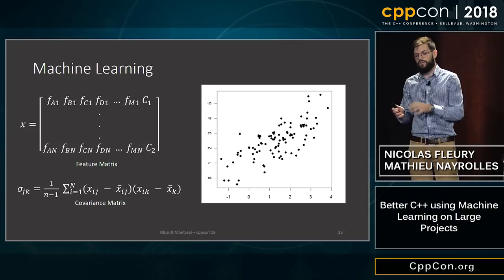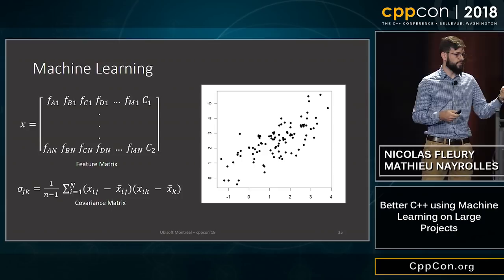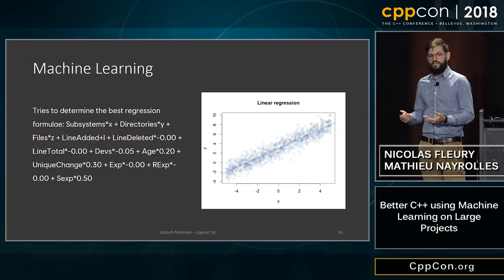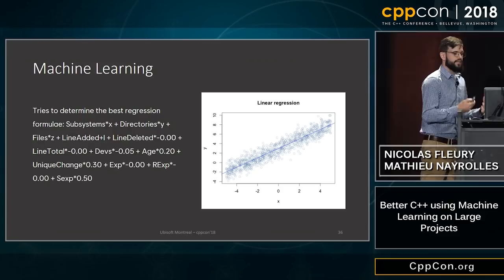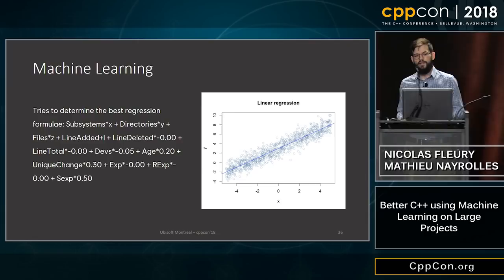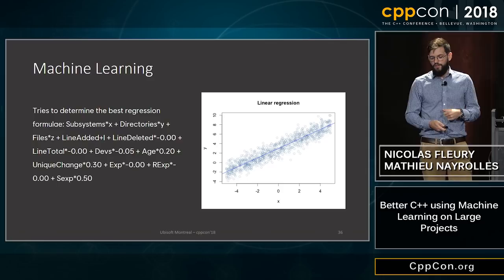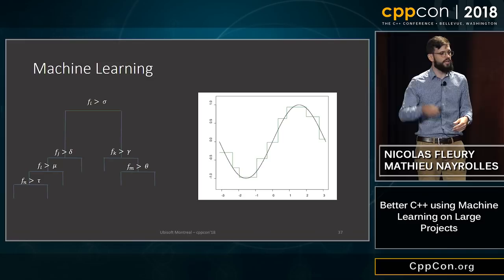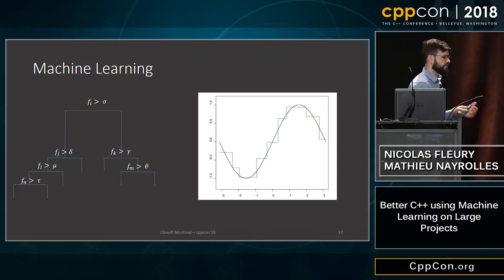If you have more complex data, linear regression won't help you. Instead, you can use decision trees. For each step of the decision tree you have a feature and a threshold — if the value of the feature is above the threshold you go right, if below you go left. Every 90-degree angle in the curve corresponds to a return within the tree.